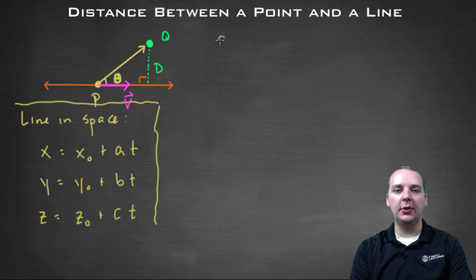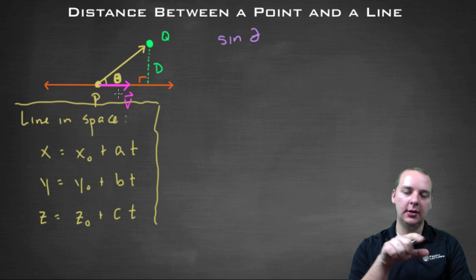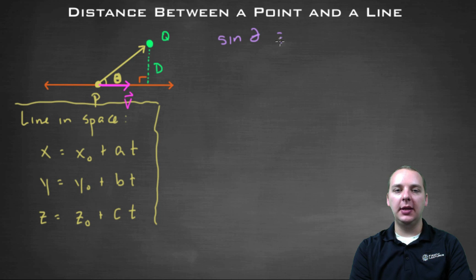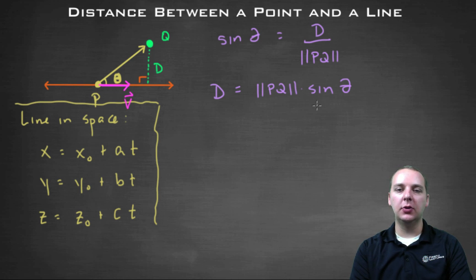And you could say something to this effect. You could say that the sine of theta, and theta is the angle that your vector PQ makes with the line there, that would be equal to the distance that we're after, divided by the magnitude of PQ. Or to say it another way, you could multiply the norm of PQ to the sine term, and have the distance equal to the magnitude of PQ times the sine of theta. So this will compute your distance.